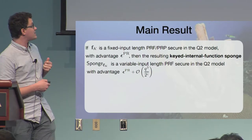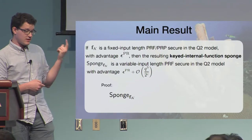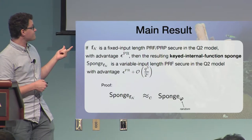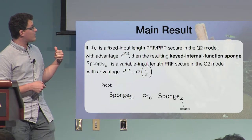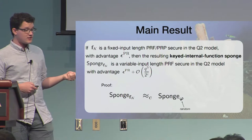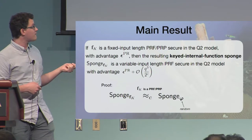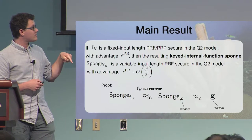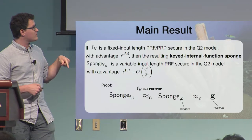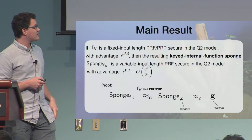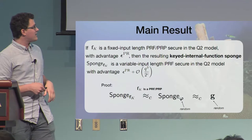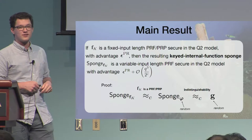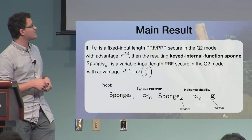Okay, so how do we prove this statement? This is pretty straightforward. So we start with the sponge with the keyed function. We want to show that it is close, computationally indistinguishable from sponge with a random internal function. So this follows from the definition of FK. And then we want to go to the random function with the same input-output format as sponge. And this is done by indistinguishability. So basically, this is what we call quantum indistinguishability. And this is the hard part, because this follows from the definition.